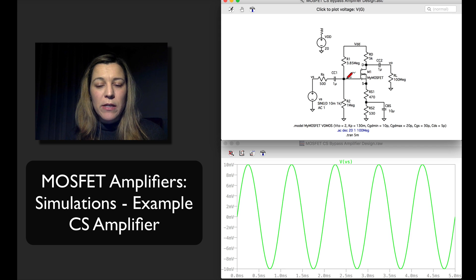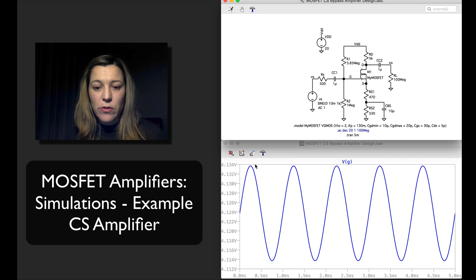But remember I set my DC bias point at the gate to be around 4 volts and so I expect that when I measure the signal here I'm going to have the same 10 millivolt signal but riding on a 4 volt offset. So there it is.